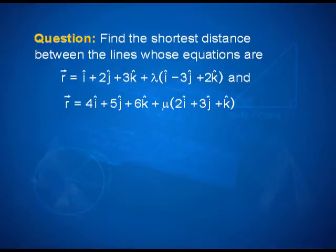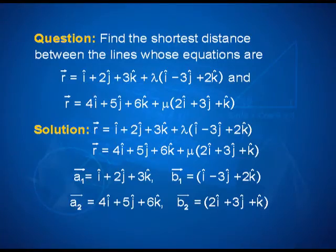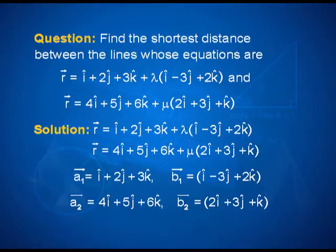Find the shortest distance between the lines whose equations are: vector r equals i-cap plus 2j-cap plus 3k-cap plus lambda times (i-cap minus 3j-cap plus 2k-cap). Relating these to the general form, vector A1 and A2 are the coordinates of points lying on each line. In this case, vector A1 is i-cap plus 2j-cap plus 3k-cap, and vector B1 — the direction vector multiplied by lambda — is i-cap minus 3j-cap plus 2k-cap.